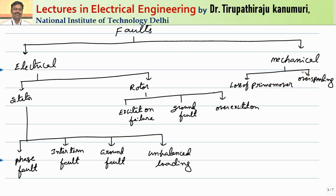The second mechanical problem is over-speeding, which generally happens when the load is suddenly removed or the input to the prime mover is suddenly increased. In that case, the output voltage increases and the frequency will also increase. Since alternator stability is a concern, the frequency should be within limit. Coming to the electrical faults, they can happen either in the stator or in the rotor.